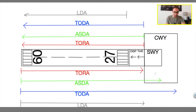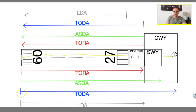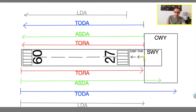Now we've got the Takeoff Distance Available — TODA. The takeoff distance available is the distance available to the pilot from the start of the takeoff all the way through the takeoff run, rotation, and then transitioning into the initial climb phase. Normally you should reach, by the end of the clearway if available, a screen height over the clearway at a minimum speed of V2. For runway 09, the TODA goes from the threshold all the way down to the end of the clearway. However, since runway 27 doesn't have a clearway, the TODA for runway 27 goes from the displaced threshold all the way to the end of the runway only.